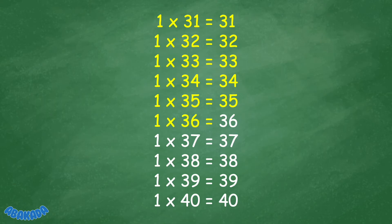1 times 36 equals 36. 1 times 37 equals 37. 1 times 38 equals 38. 1 times 39 equals 39. 1 times 40 equals 40.